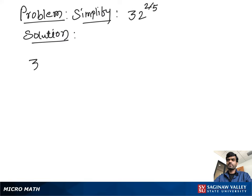Simplify 32 raised to the 2/5 power. First, we find the fifth root of 32, then we raise it to the second power.